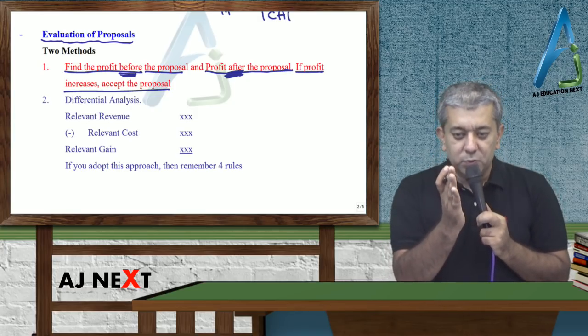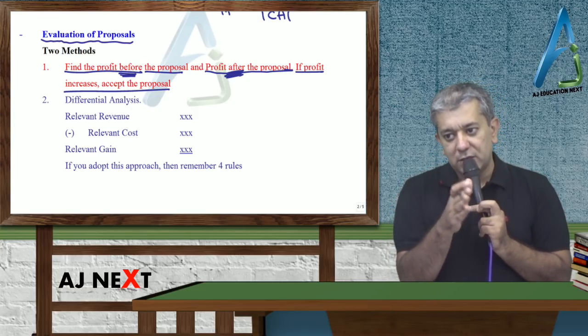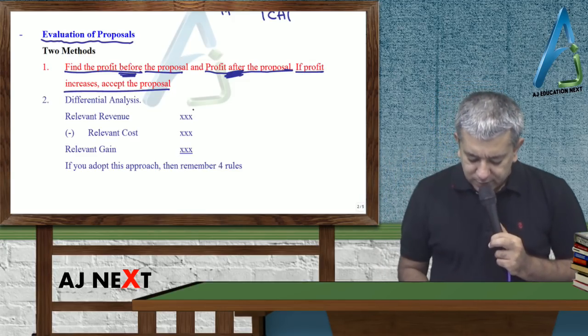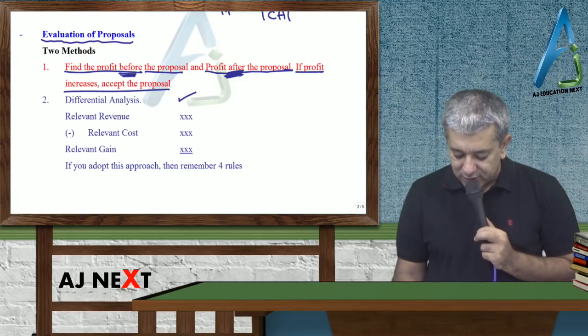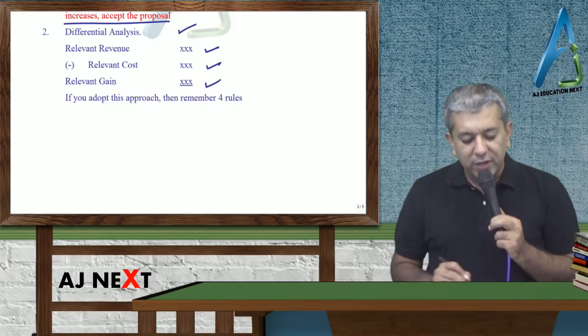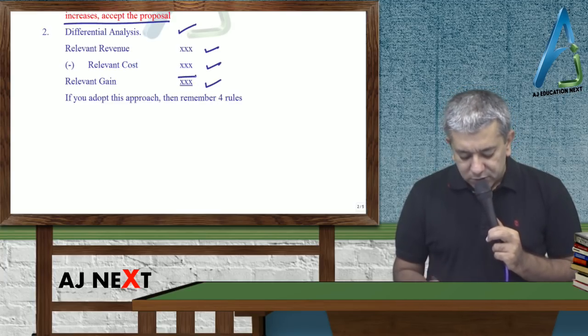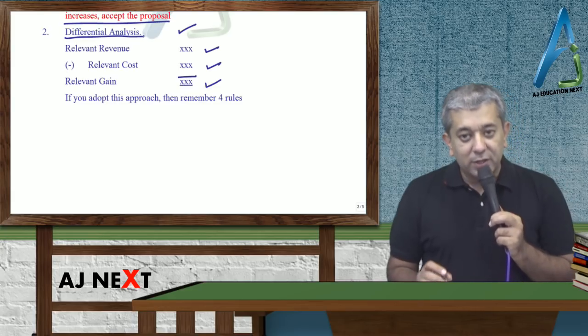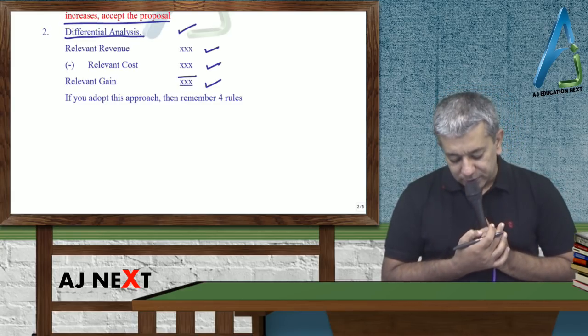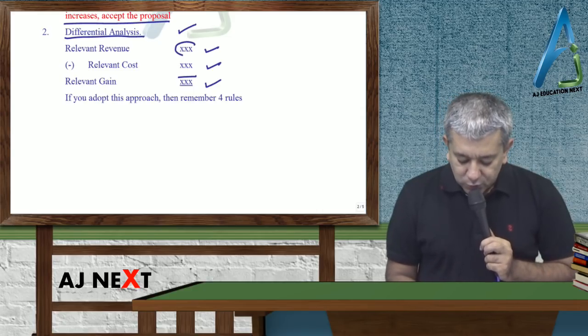Toh yaha pe aap ko doh statement tayyar kena padega. Jab tak proposal nahi tha, kitna profit kamata tha. Jab tak proposal a gaya, kitna profit kamau ga. Doh statement ke na kaam khatam kar de na. Varna differential way se kar lo. Differential way matlab, relevant revenue minus relevant cost.